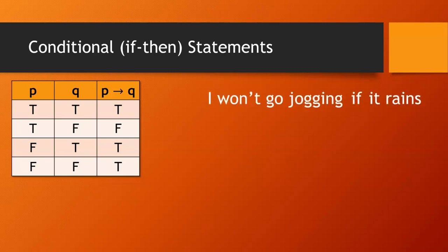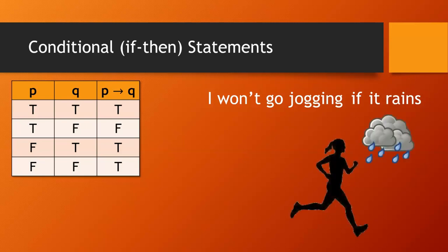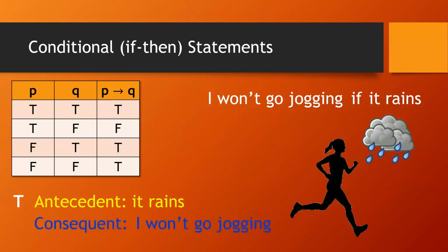Let's go back to this conditional statement: 'I won't go jogging if it rains.' Suppose you made that statement to me, and then I found out that you went jogging in the rain. Does that mean you lied to me, or were you telling the truth? Let's find the part of the truth table that tells us whether or not you were lying. The antecedent is 'it rains,' and it did rain, so that part of the statement is true. The consequent is 'I won't go jogging,' but you did go jogging, so that statement is false. So the conditional statement 'I won't go jogging if it rains' has a true antecedent and a false consequent, which means the conditional statement is false.